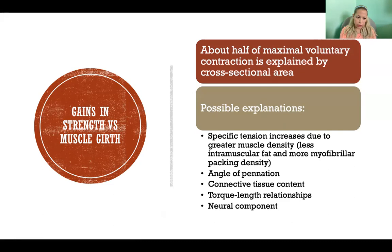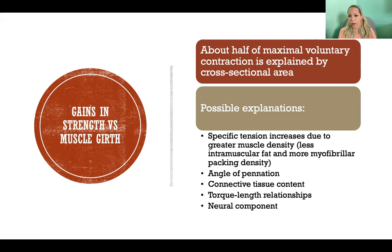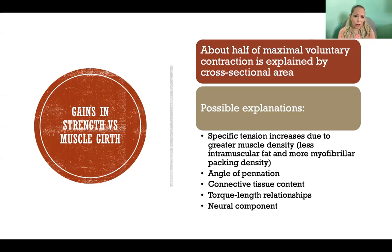There's a lot of research on this area in terms of what is changing in response to strength training that is causing us to be stronger, even when the muscle isn't actually getting larger. Only about half of our maximal voluntary contraction is explained by cross-sectional area — the cross-section of a muscle is correlated with strength, but only about half of the difference in maximal voluntary contraction between one person and another is explained by the difference in cross-section. So how do we account for that other half in terms of what is causing the difference in strength if it's not the difference in size of the muscle?